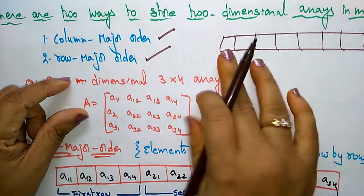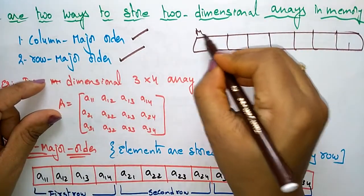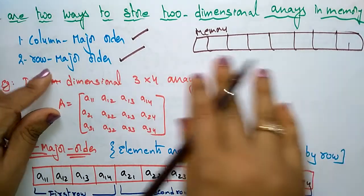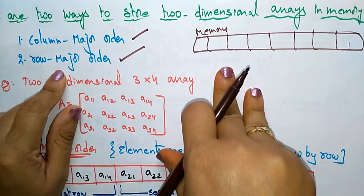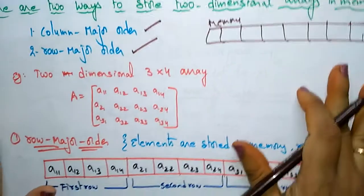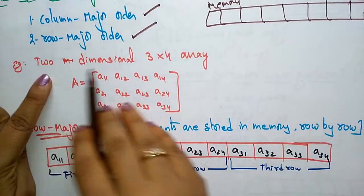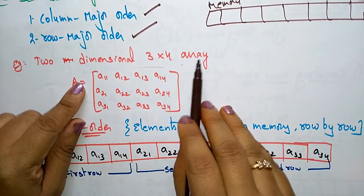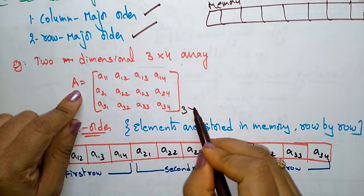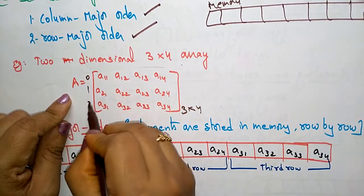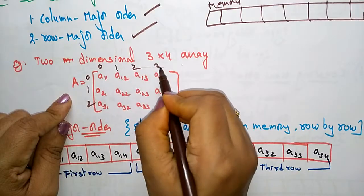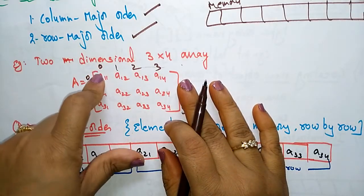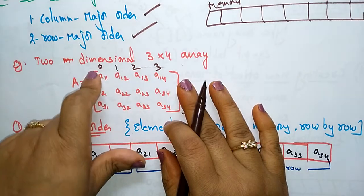Here is a diagram of memory where data will be stored in either column major or row major order. Let us take a two dimensional array with three rows and four columns. The indices are 0, 1, 2 for rows and 0, 1, 2, 3 for columns. Based on your compiler, the index will start with 1 or 0.